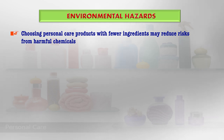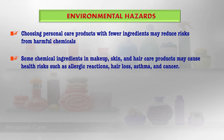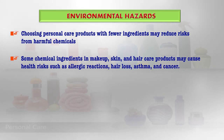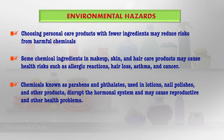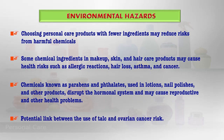These chemicals can accumulate in the food chain and cause harm. Choosing personal care products with fewer ingredients may reduce risk from harmful chemicals. Some ingredients in makeup, skin care, and hair care products can cause allergic reactions, hair loss, asthma, and cancers. Parabens and phthalates, extensively used in lotions, nail polishes, and other products, can disrupt the hormonal system, mimic the endocrine system, and cause reproductive health issues. There is also a reported potential link between the use of talc and ovarian cancer risk.